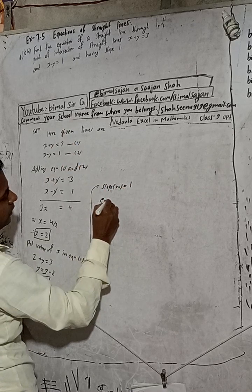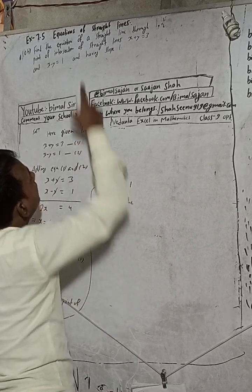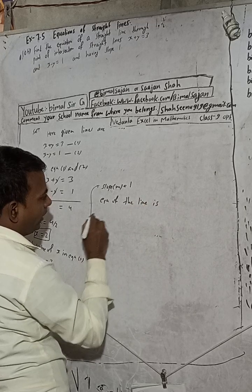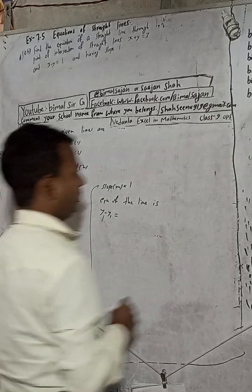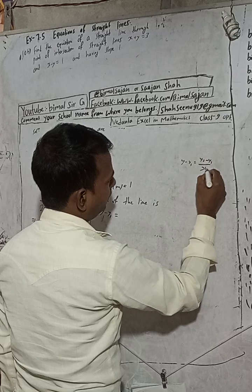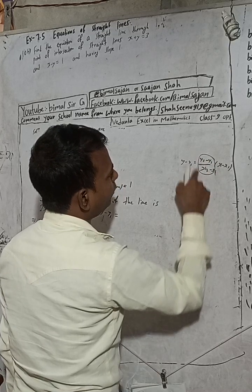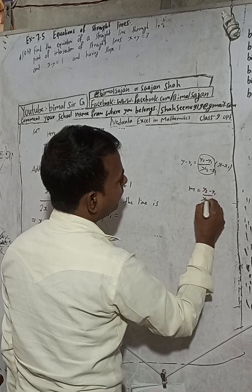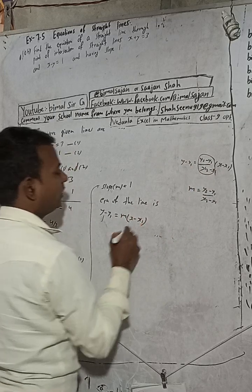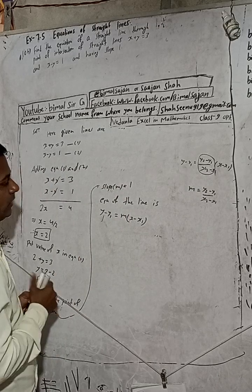Now we will find the equation of the required line. The equation of a line given one point and slope uses the point-slope form: y minus y1 equals m times x minus x1, where m equals y2 minus y1 divided by x2 minus x1. Here m is given as 1 and the point is (2, 1).